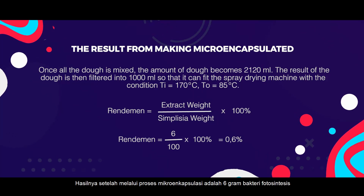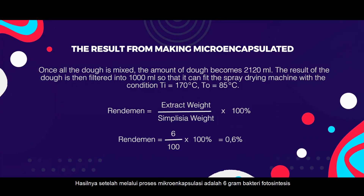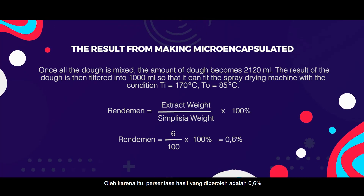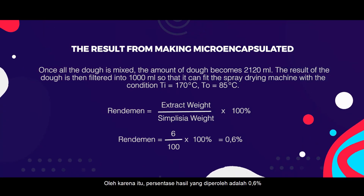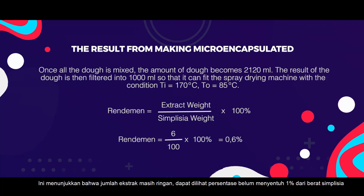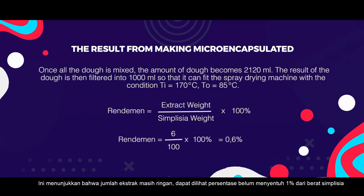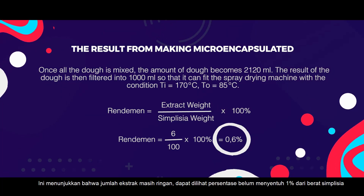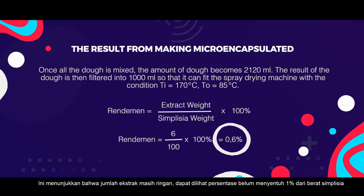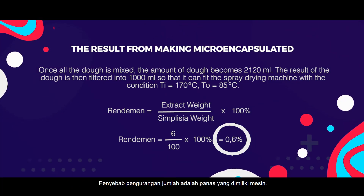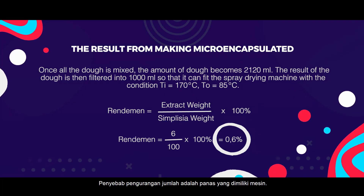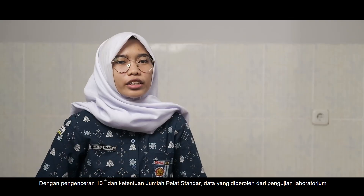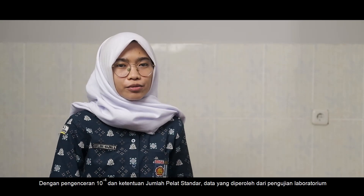The result after going through the microencapsulation process is six grams of photosynthetic bacteria powder. Therefore, the percentage yield obtained is 0.6 percent. This shows the amount of extract is still low, as the percentage has not reached one percent of the simplicia weight, due to quantity reduction from the heat of the machine.